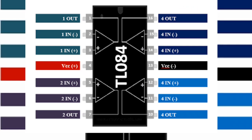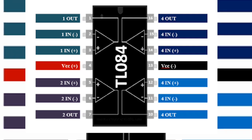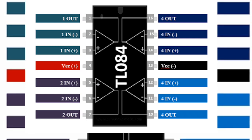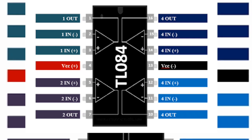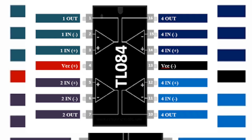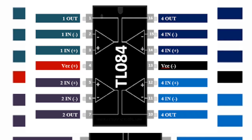I don't know the exact difference between the TLO74 and TLO84. We can see how the IC is located and use the input and output accordingly.